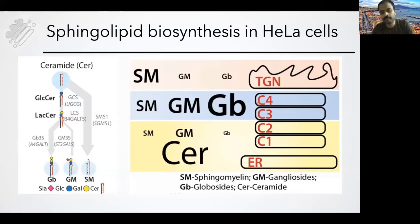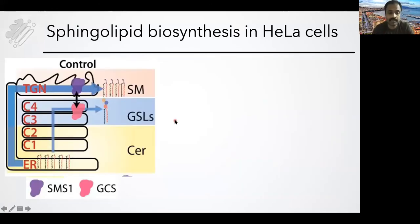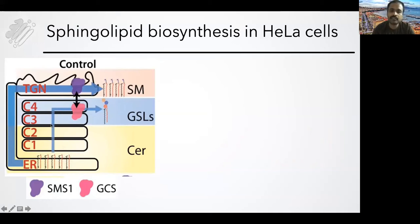Based on published literature, how sphingolipid biosynthesis happens in the Golgi is that ceramide is made in the ER, and from there it is transported to the TGN by CERT in a non-vesicular way, where it gets converted to sphingomyelin. The rest of the ceramide, which is not transported this way, is transported by classical vesicular transport to the Golgi apparatus, where it gets converted to glycosphingolipids.